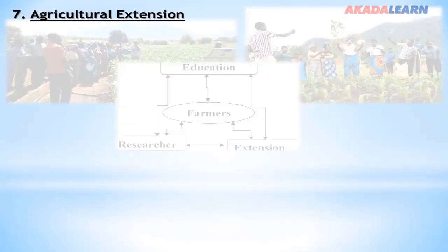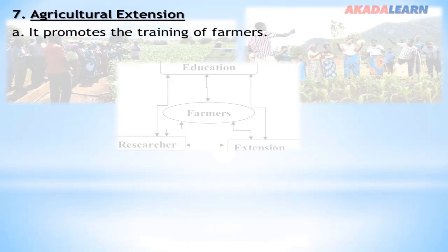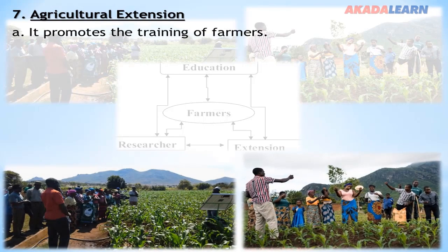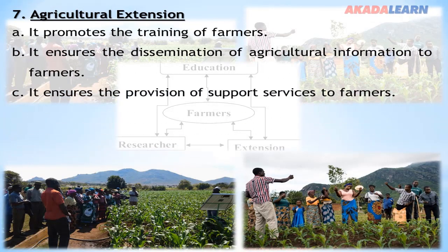Agricultural Extension: Agricultural extension has to do with the dissemination of information from the research institute, through the extension agent, to rural farmers, so that they will be able to have access to new innovations. It promotes the training of farmers, ensures the dissemination of agricultural information to farmers, ensures the provision of support services to farmers, and links farmers to researchers.